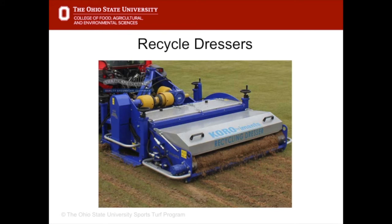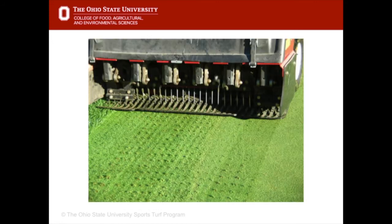New technology in sports turf management includes recycled dresses, which pull cores then pulverize them and put them back on the surface as a top dressing. Another version of the traditional coring method is to use smaller diameter tines on closer spacing, called quadratines. Quadratining is often done during summer months to increase soil gas exchange with minimal disruption to the turf.